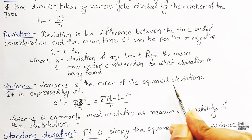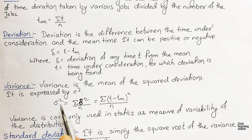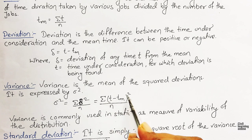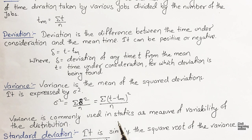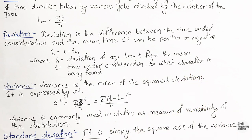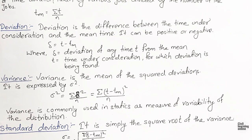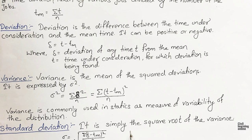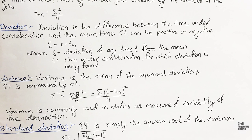Variance is the mean of squared deviations, expressed as sigma squared. The formula is: sigma squared equals summation of (t minus tM) squared, divided by n. Variance is commonly used in statistics as a measure of variability of the distribution — how much the deviations vary from one another. Standard deviation is simply the square root of variance.